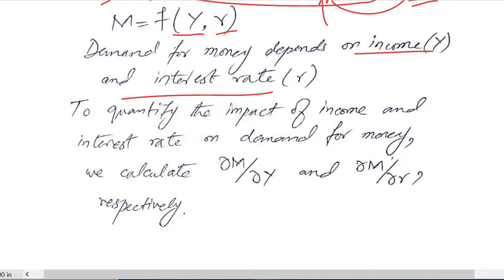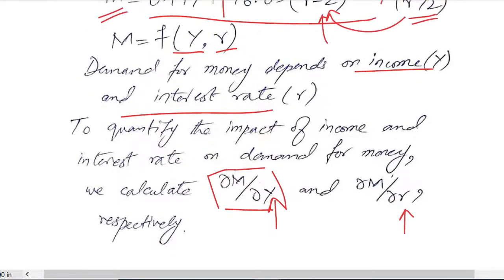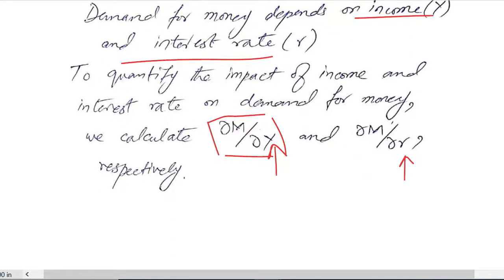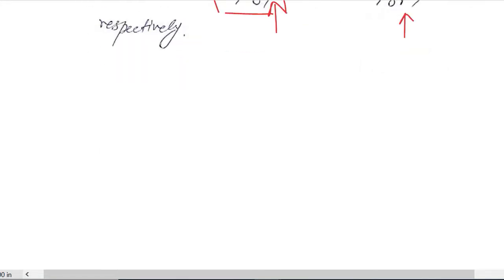In order to quantify the effects we can take the partial derivatives, primarily with respect to Y and then with respect to R. By using these two partial derivatives we can come to the effects of Y and R on M, that is effects of income and discount rate on demand for money.